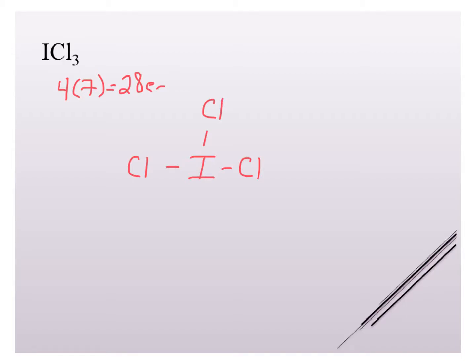So I've used six electrons, so that means I've got 22 electrons left. Now I'm going to start filling in the octets on my terminal atoms, and when I've done this I've used 24 electrons.